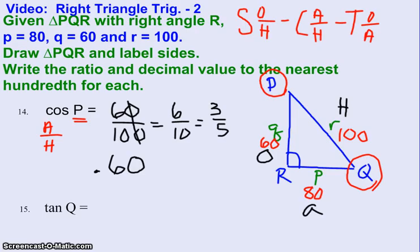To find the tangent, I look up at SOHCAHTOA, and remember tangent is opposite over adjacent. So from the perspective of Q, opposite is 60, and adjacent is 80.